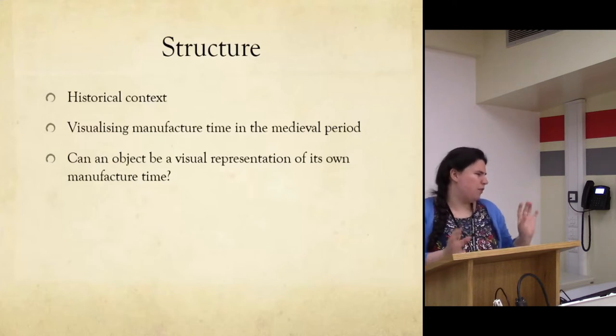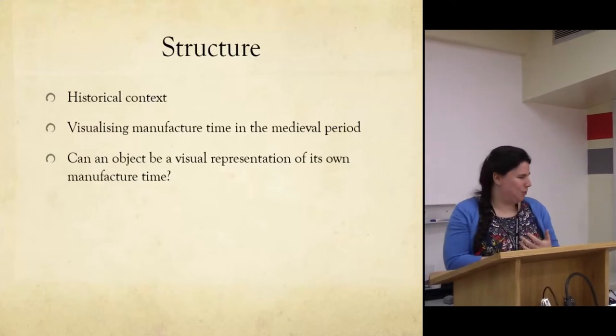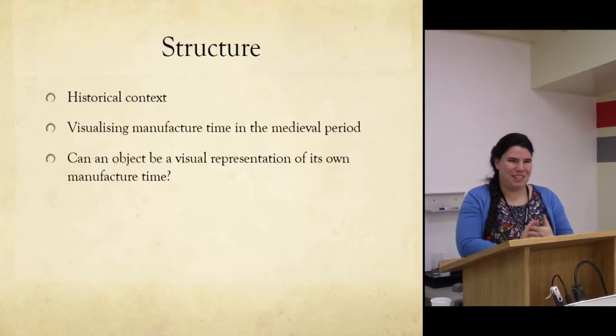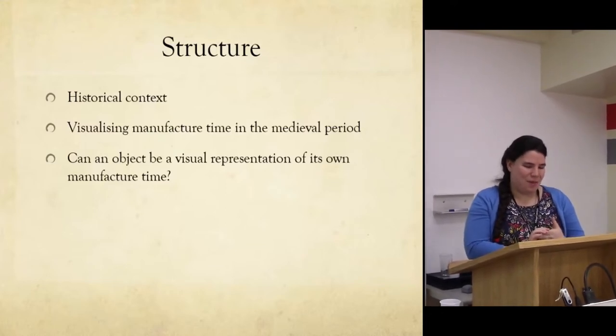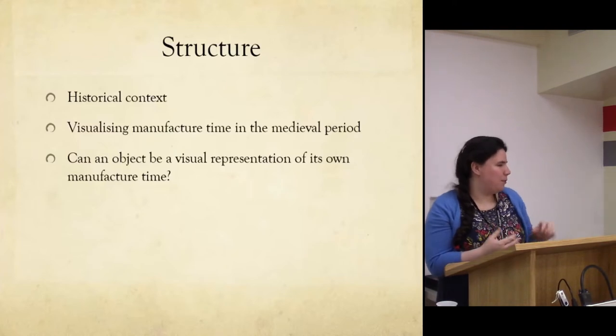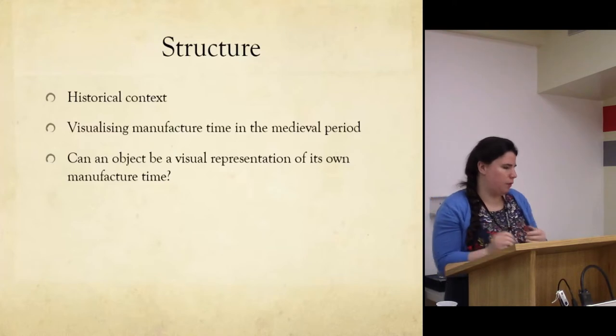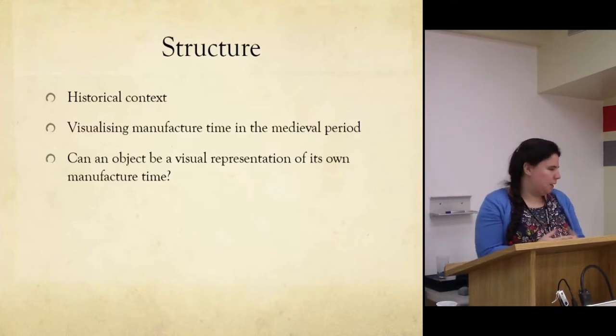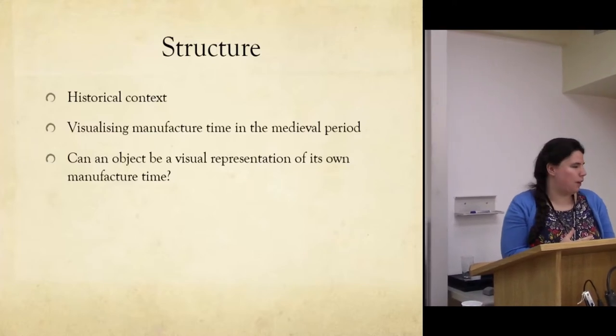What I want to get at is why it's important to consider time in relation to textile production and to explore ways of visually interpreting manufactured time. I will do that by first giving a whirlwind tour of the historical context of medieval weaving, then discuss the possibility of visualizing manufactured time in the medieval period based on results from this experiment, and then get into the question of can an object be a visual representation of its own manufactured time.